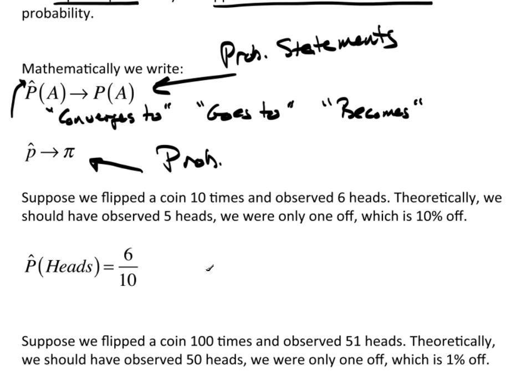Let's say we flipped a coin ten times and observed six heads. Theoretically, we should have observed five. We're only off by one, which is a 10% error. Now, keep in mind, in theory we don't know that the probability is a half. But in reality, it is a half. We should have gotten five, and we're off by 10%. That's because my sample size is pretty small.